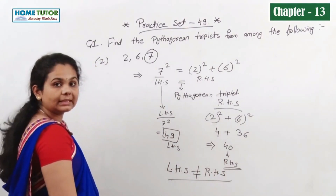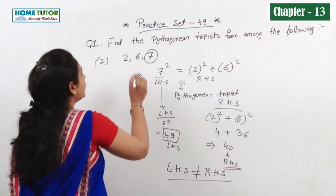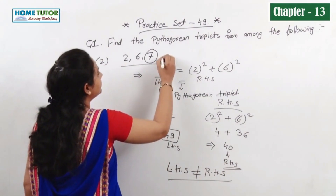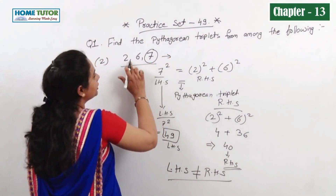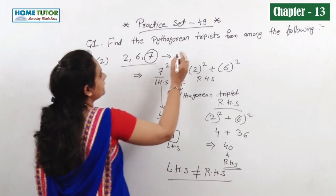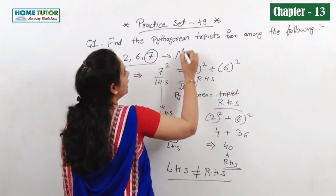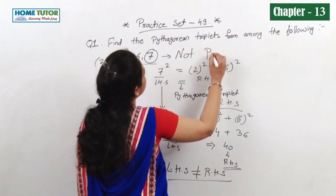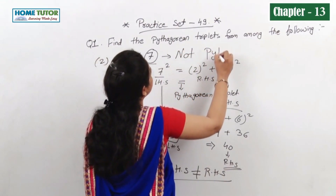LHS is 49 and RHS is 40 — LHS is not equal to RHS. This means the given numbers 2, 6, and 7 are not a Pythagorean triplet.